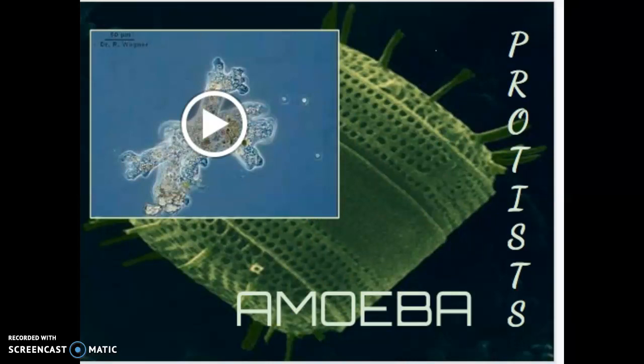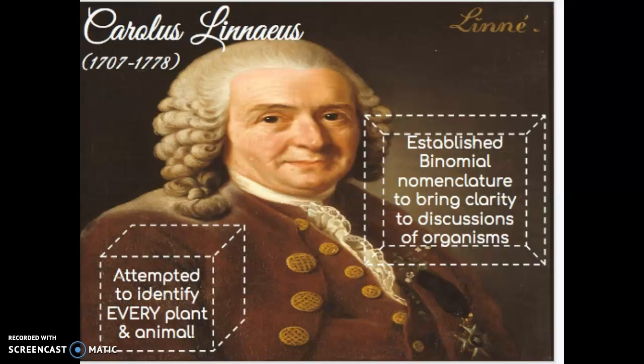Now we're going to introduce a man who I think made a difference in the way we think about science — a classifying role model: Carolus Linnaeus, who lived from 1707 to 1778. He attempted to identify every plant and animal. He also established binomial nomenclature to bring clarity to discussions of organisms.